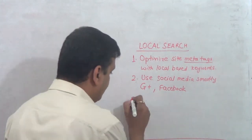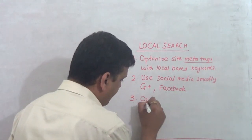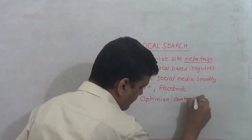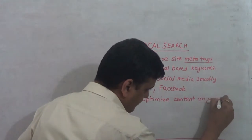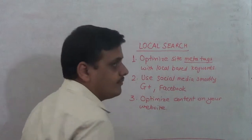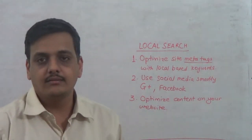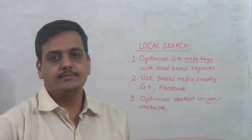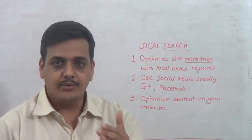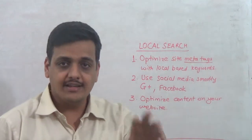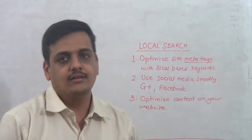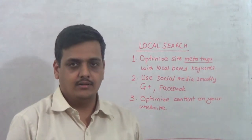Third, is optimize content. Optimize content on your website. Now what we do here is, we write about places, we write about events, we write about things which are related to your business but have significance in your particular area.